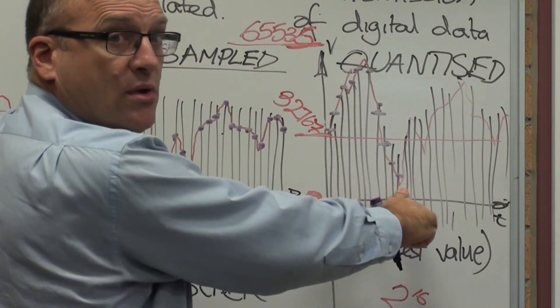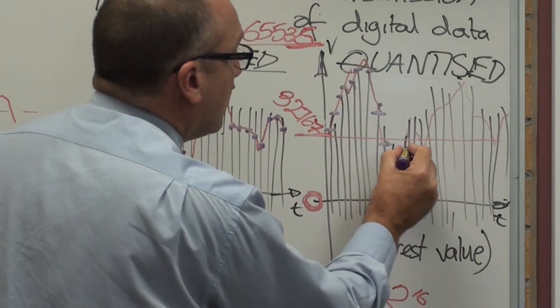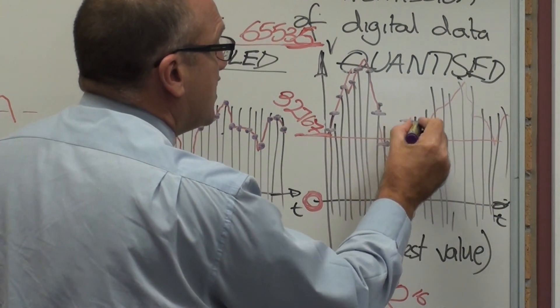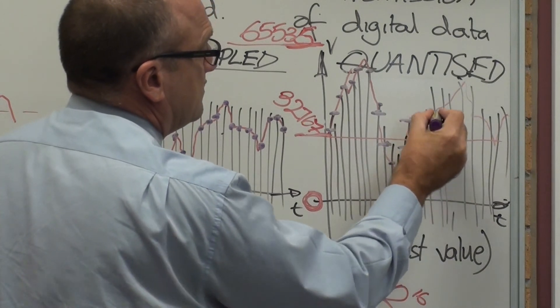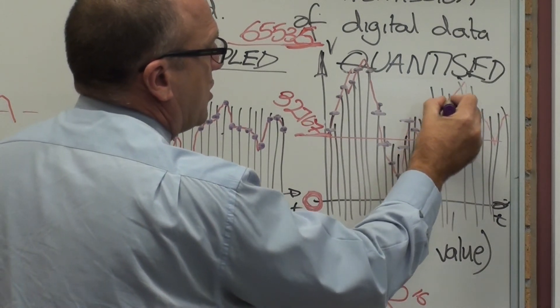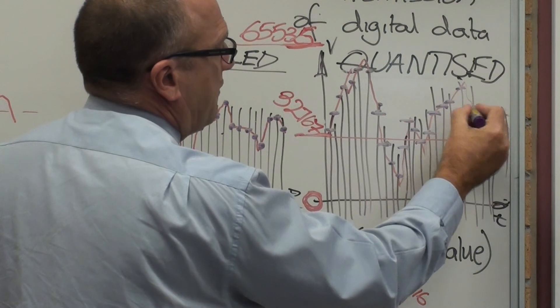Like, see, I've missed that point there. The line didn't hit that, so it doesn't exist. Missed that point there. Which tells me, Nyquist, that I'm not sampling often enough.